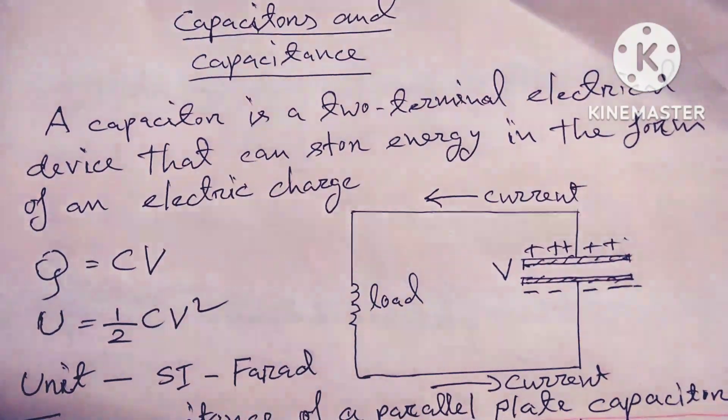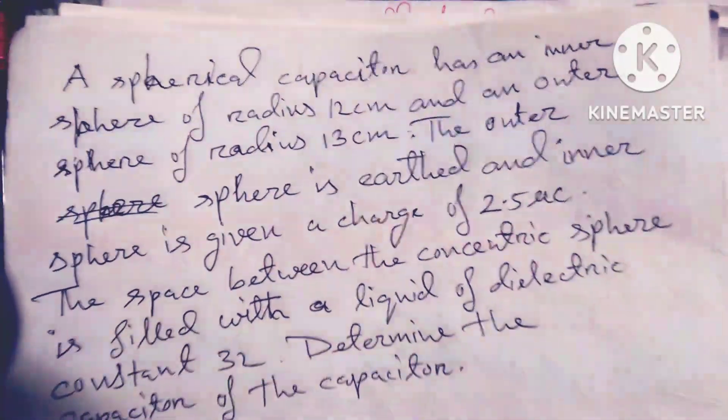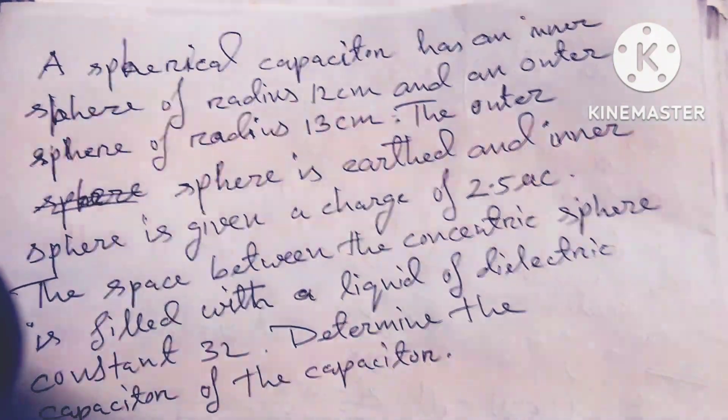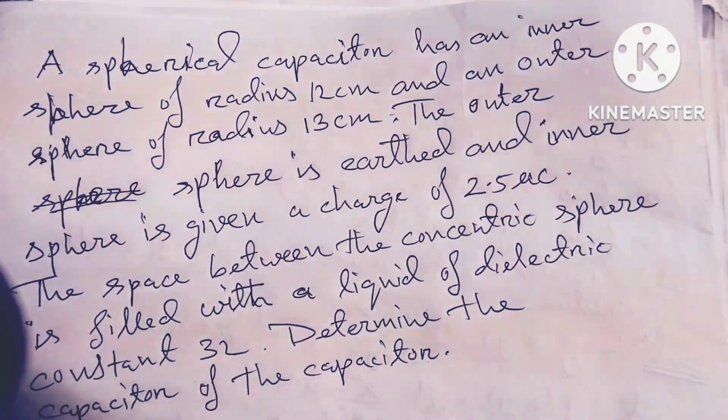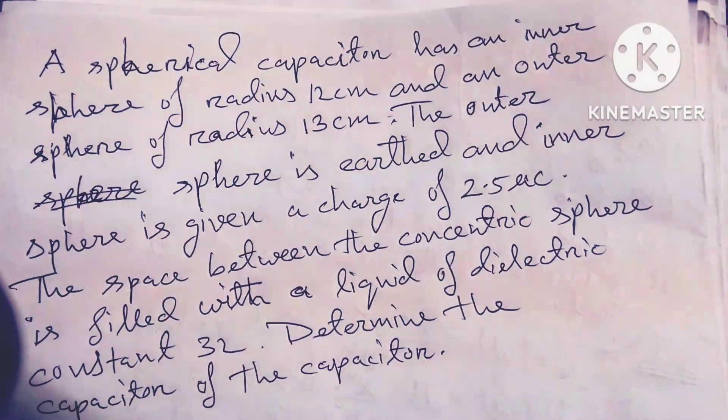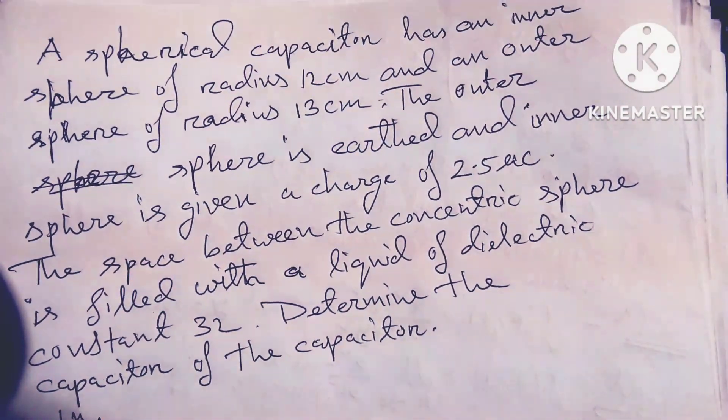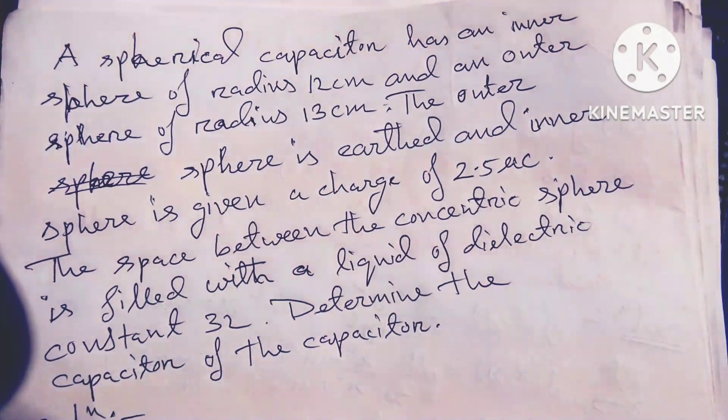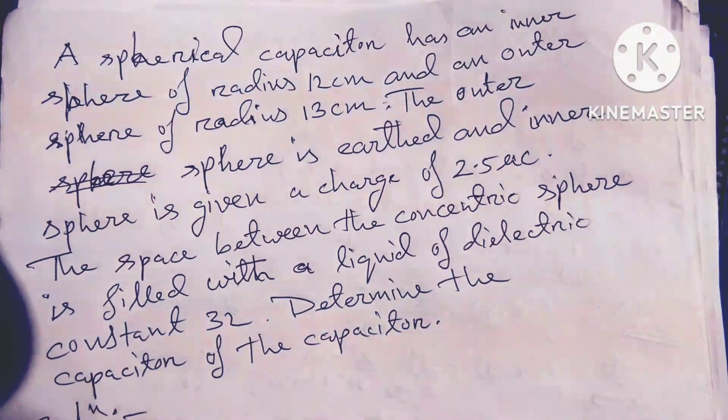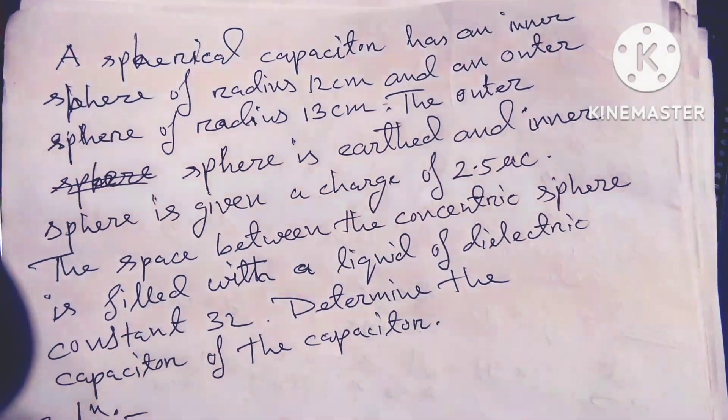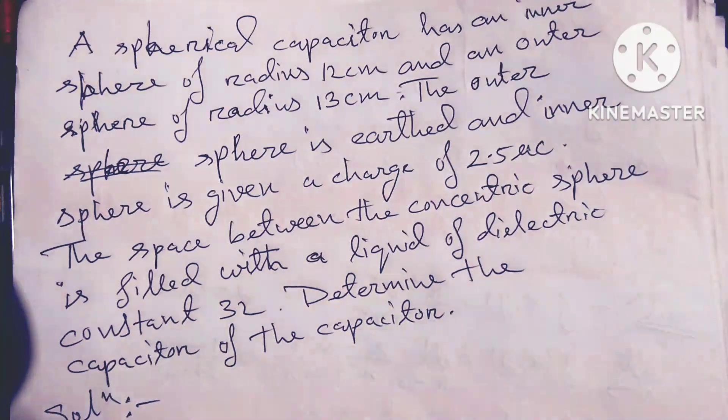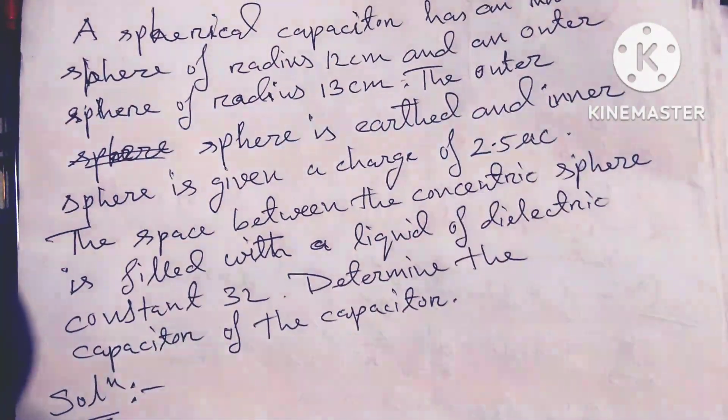A spherical capacitor has an inner sphere of radius 12 centimeters and outer sphere of radius 13 centimeters. The outer sphere is earthed and the inner sphere is given a charge of 2.5 μC. The space between the concentric spheres is filled with a liquid of dielectric constant 32. Determine the capacitance of the capacitor.